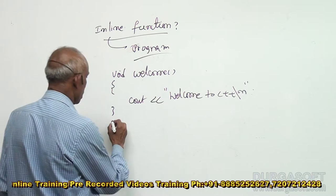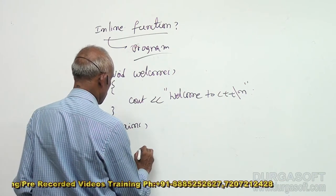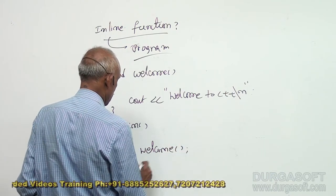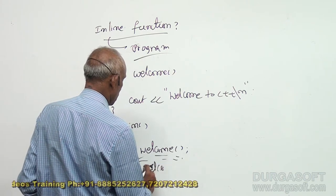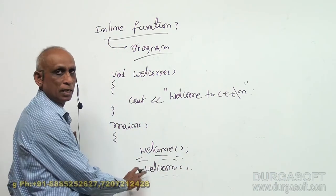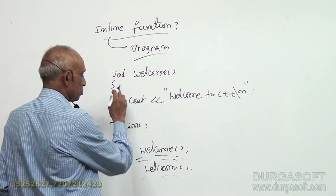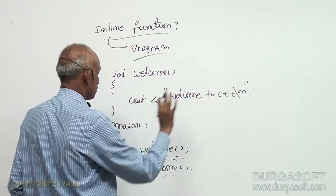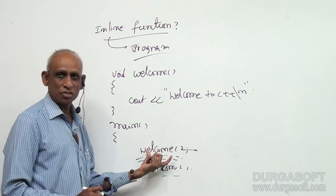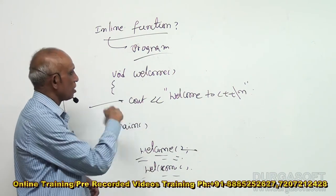Now, in the main program, I am using it. I call welcome, then some statements, then again I call welcome. Like that, I can call it any number of times. Now, what happens here is: when I call welcome, the current address is stored on the stack and control is transferred to the welcome code.